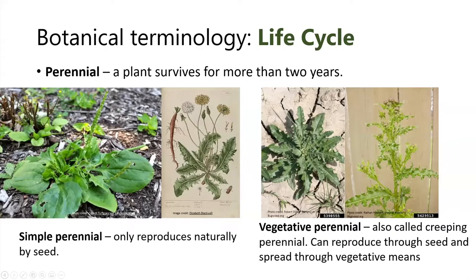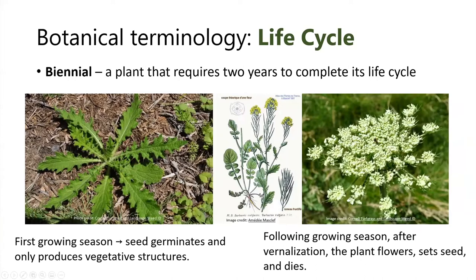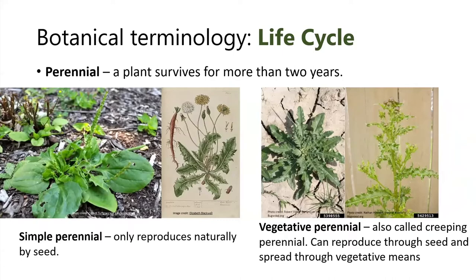For example, Canada thistle is a perennial and bull thistle is a biennial. They look quite similar to each other, making identification all the more important.